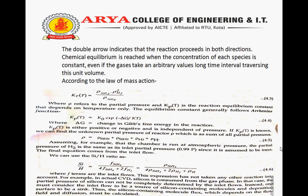If Kp(T) is known, we can find the total partial pressure of the reactor ρ, which is the sum of all partial pressures: ρ = ρ(SiH4) + ρ(SiH2) + ρ(H2). Assume, for example, that the chamber is run at atmospheric pressure.